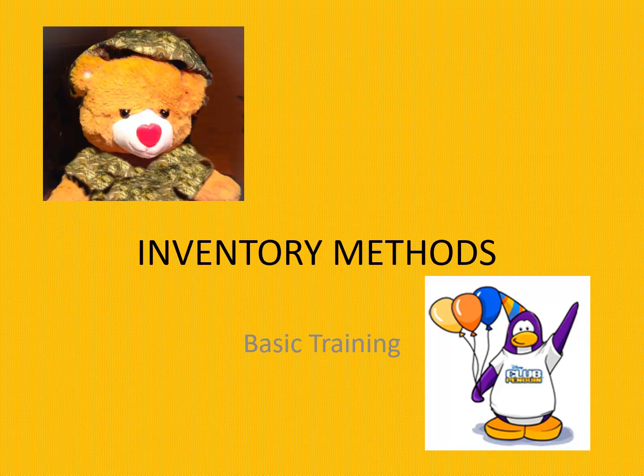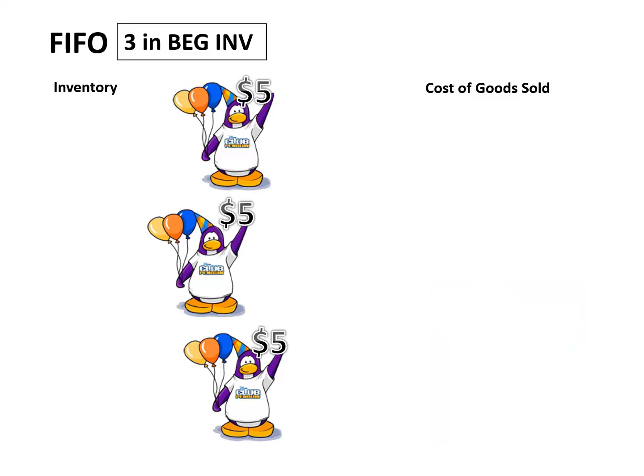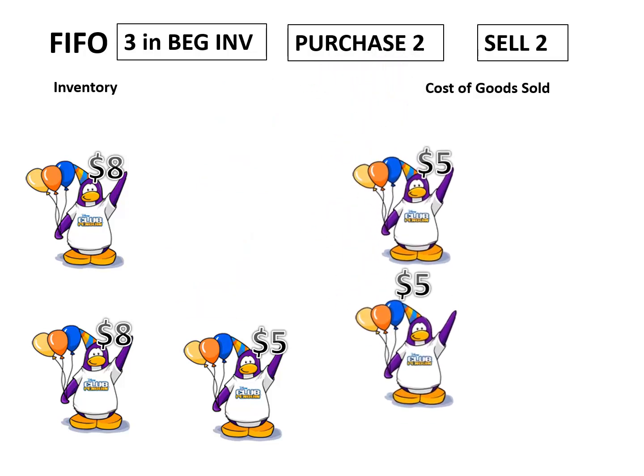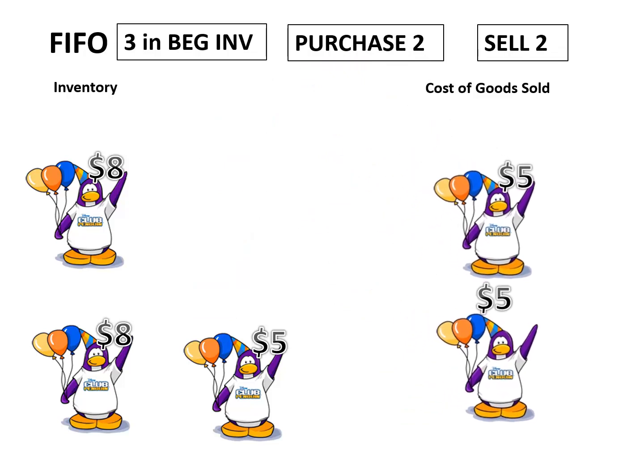Inventory methods. Start with FIFO. Have three in beginning inventory at five dollars each. Then we purchase two — these are eight dollars each. First in, first out. So when we sell two, we sell the five dollar ones.